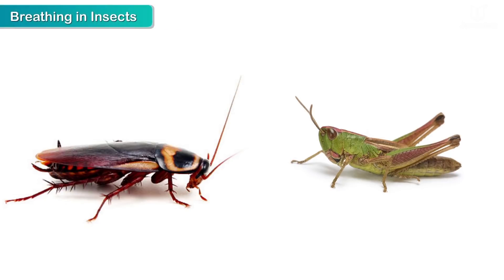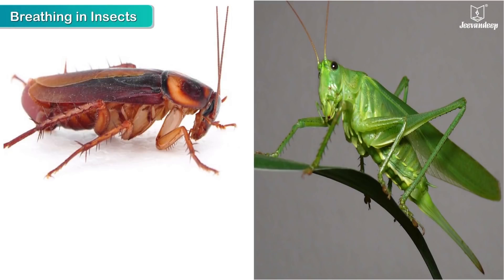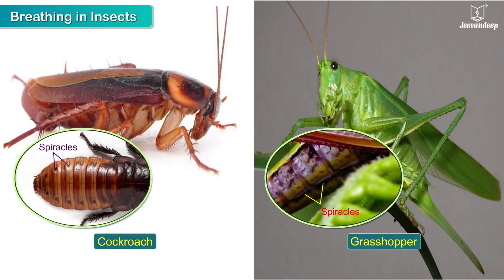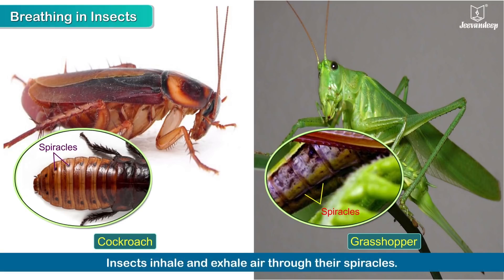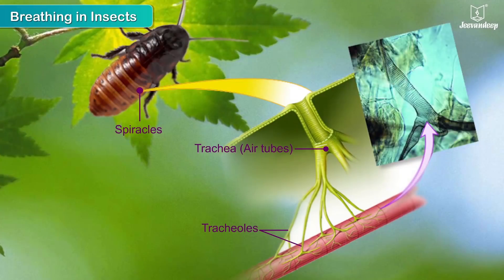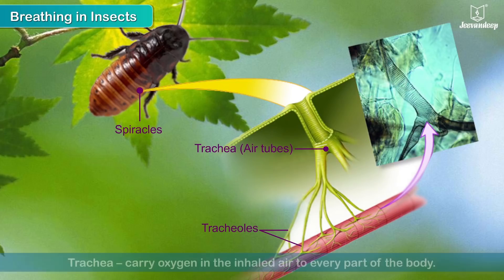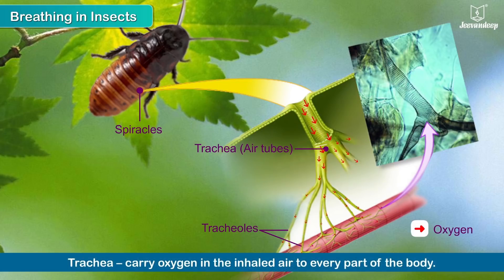Insects such as cockroaches and grasshoppers have very small openings on their bodies called spiracles through which they inhale and exhale air. The spiracles open into a network of air tubes inside the body called trachea, which carry oxygen in the inhaled air to every part of the body.